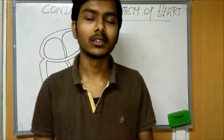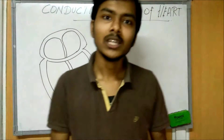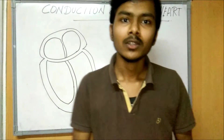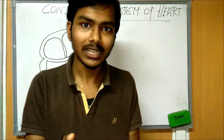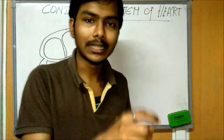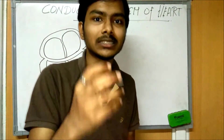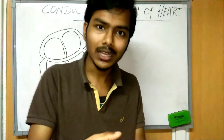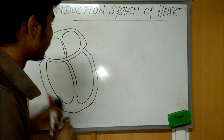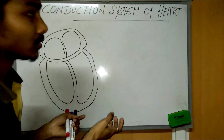Hi everyone, this is Vignesh from VNMU. Today we are going to see the conduction system of the heart. We already discussed the structures and layers present in the heart. The specialized cells present in the myocardium are called cardiomyocytes or myocardiosites. These cells, such as the SA node and AV node, generate auto electric impulses to make the conduction system.